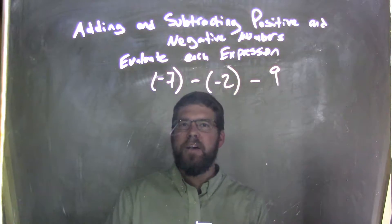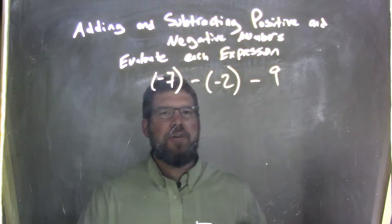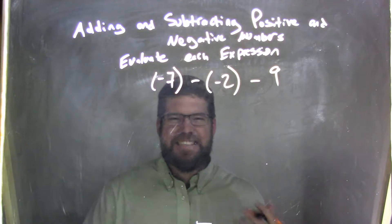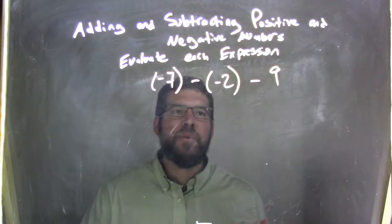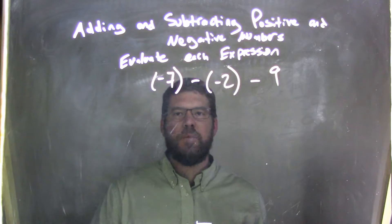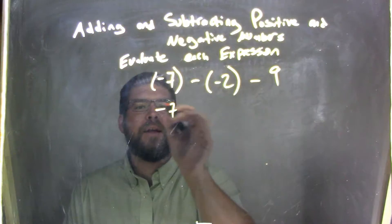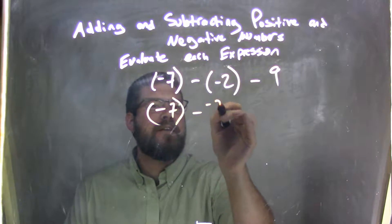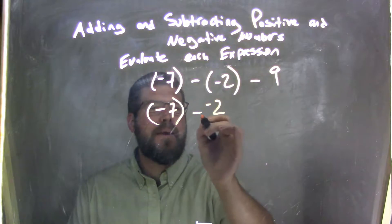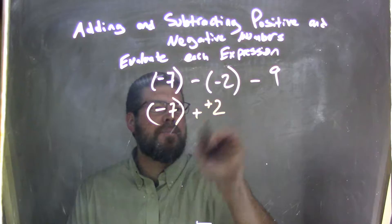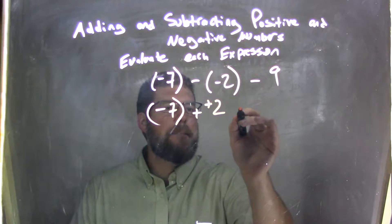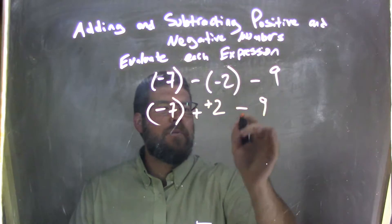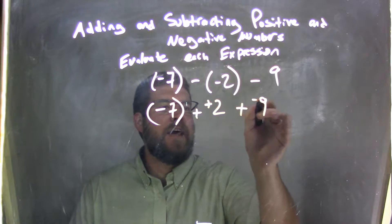How are we going to solve this? Well, what I like to do is just kind of make them all addition, because that's easier for me to see. So the negative 7 I'm going to bring down here, but that minus a negative 2 I'm going to make to be plus a positive 2. And that minus a 9 I'm going to rewrite to be plus a negative 9.